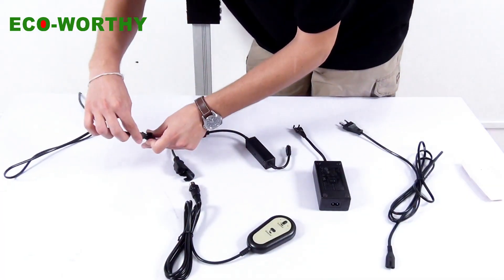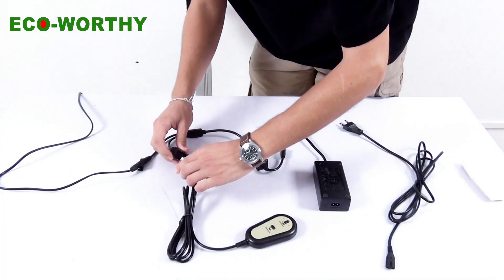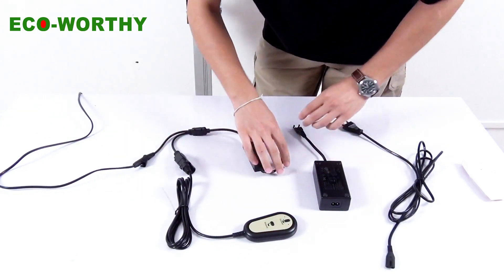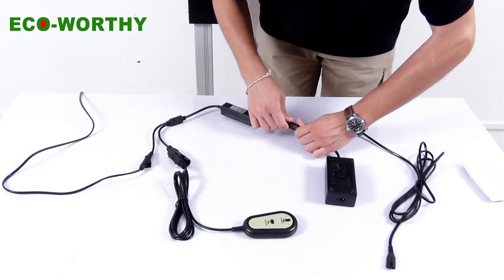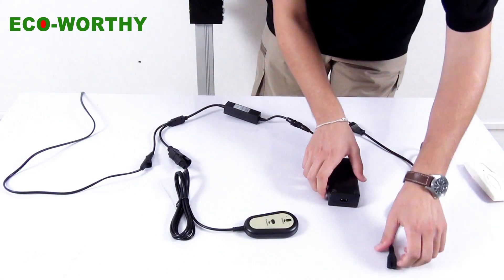And now the assembly is completed. We can connect the transformer, the wire controller, the power line and then plug it.